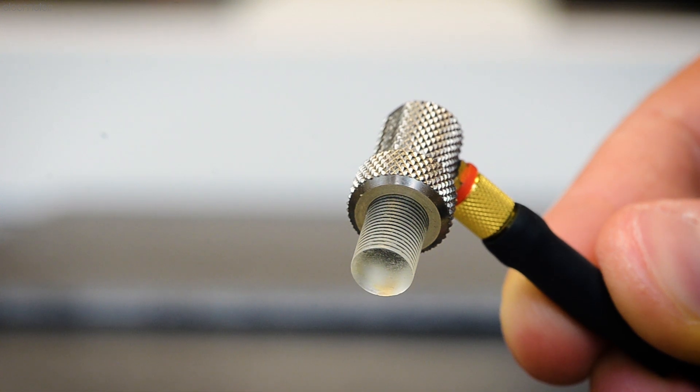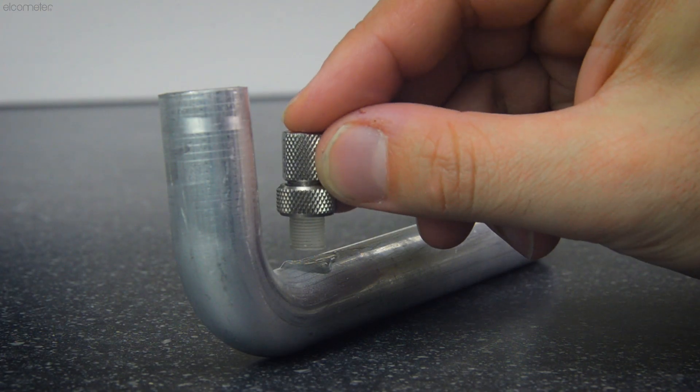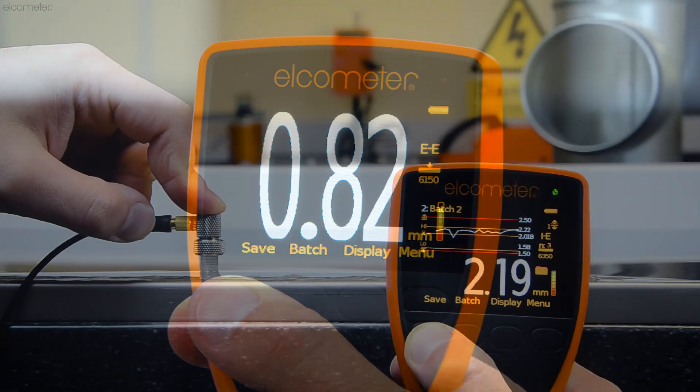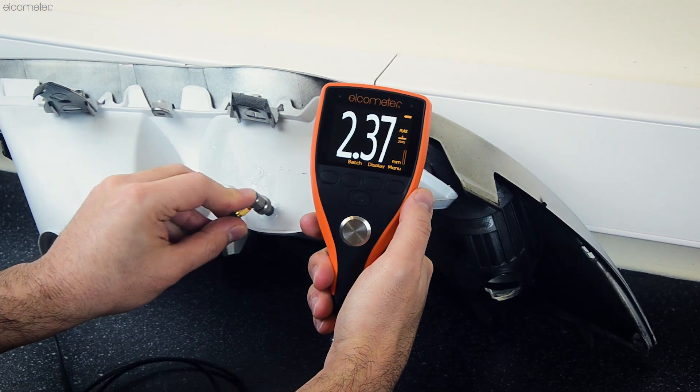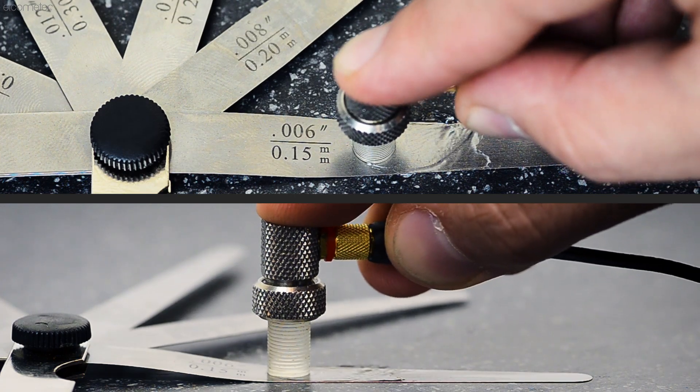The Elcometer PTG range uses single element transducers to provide precise, accurate material thickness measurements to one hundredth of a millimeter or one thousandth of an inch of thin, uncoated materials such as steel, titanium, and plastic, from as little as 0.15 millimeters thick.